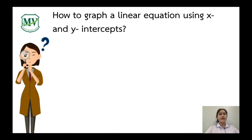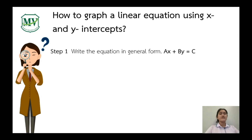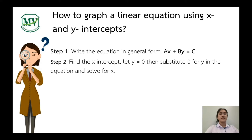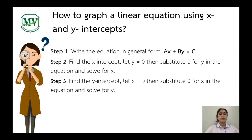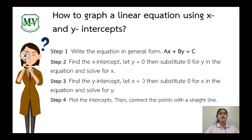Now that you know how to identify the x and y intercepts, here are the steps to graph a linear equation using x and y intercepts. Step 1: write the equation in general form — ax plus by equals c, where a and b are coefficients of the variables x and y, and c is the constant. Step 2: find the x-intercept. Step 3: find the y-intercept. Step 4: plot the intercepts, then connect the points with a straight line.